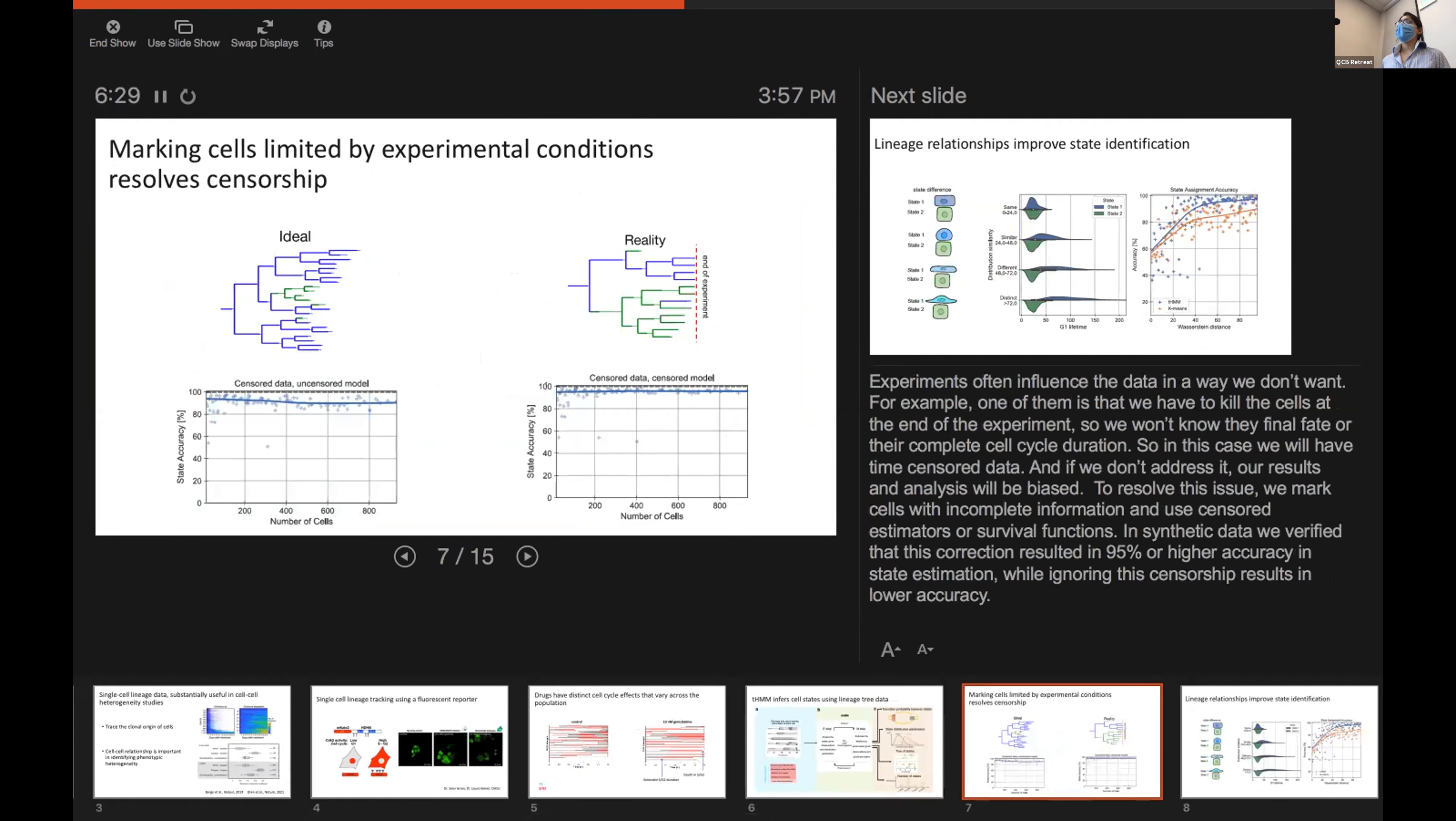So, experiments always influence our data in a way that we don't want. In an ideal world, if you want to have a lineage tree of cells, it would look like this. When we have all the information about all of the cells, you know when they divide, when they die.